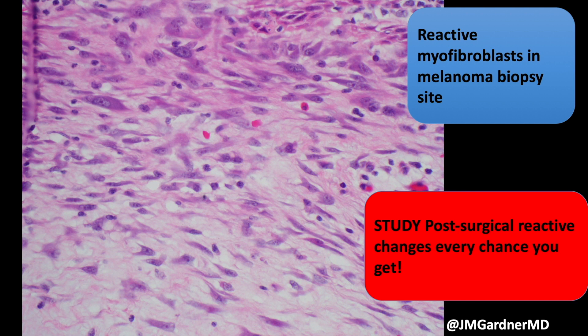Anytime you know something is not going to be tumor and is going to be reactive, study those cells. Then in a hard case where you're not sure if it's a reactive process or a tumor, you'll have a better sense of the range of features. This applies to squamous epithelium, reactive myofibroblasts, and melanocytes in sun-damaged skin — getting to feel the range of normal for reactive processes.